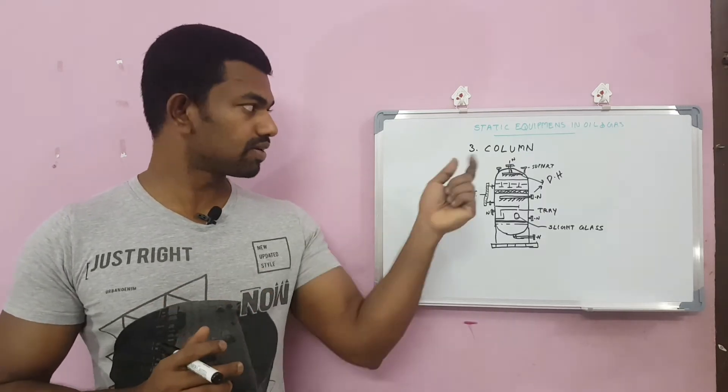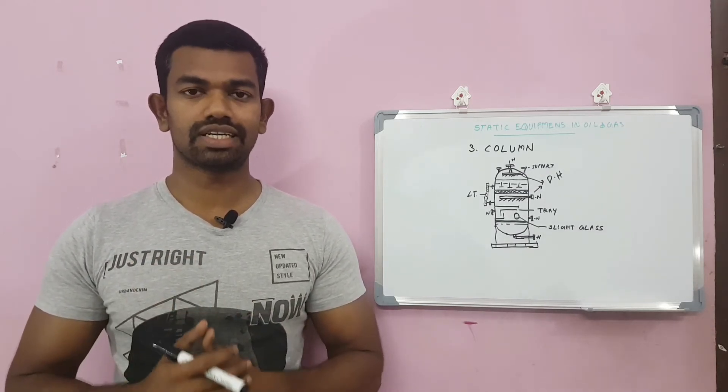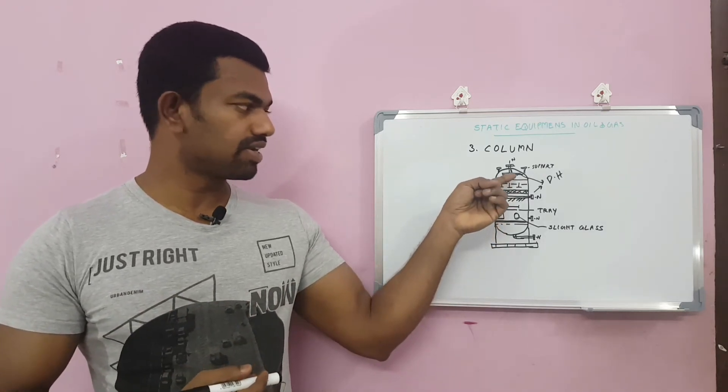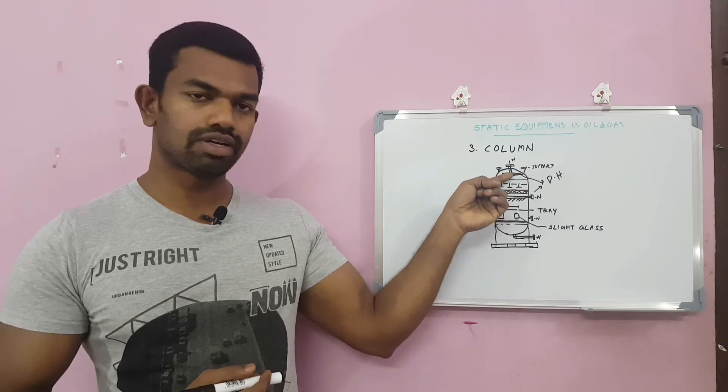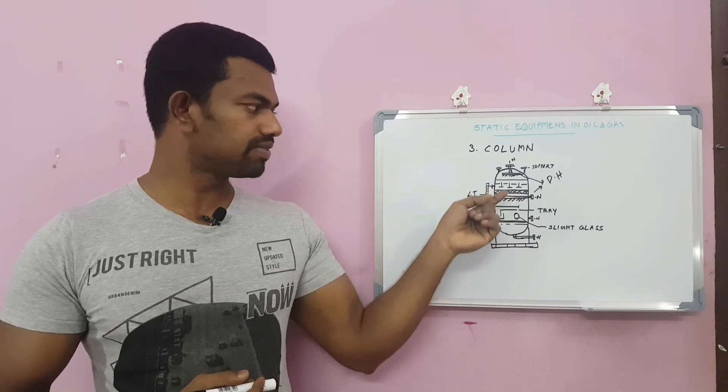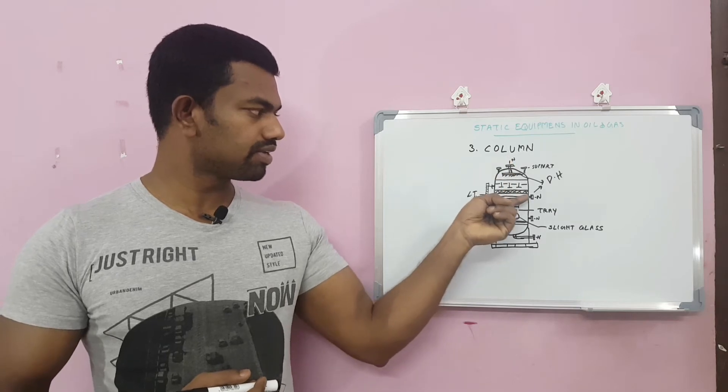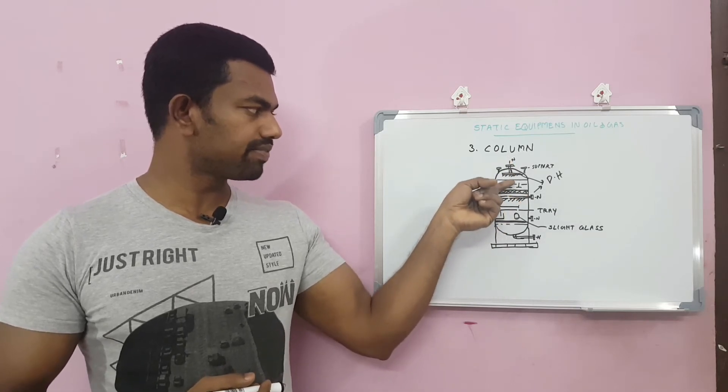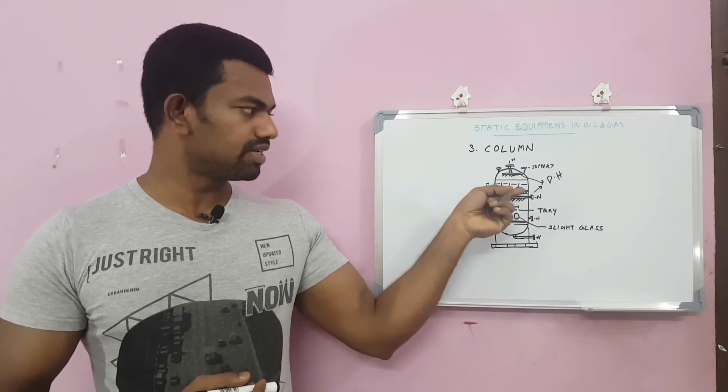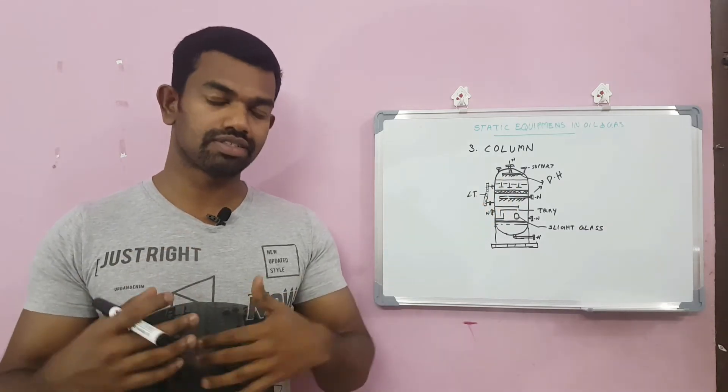Now we can see columns. Columns are vertical equipment using for separating the liquid and gas combinations. Here as you can see there is a distributor, distribution header here. The initial product will be applied over here. It will be splashing over this area and it will be separated by the trays and demesters.